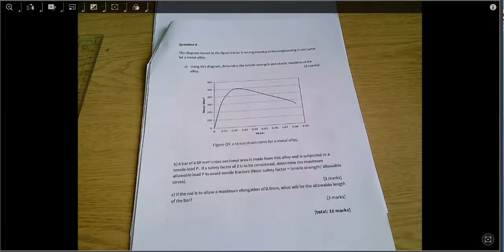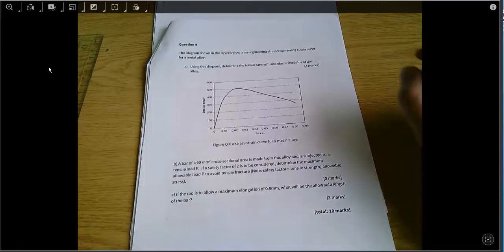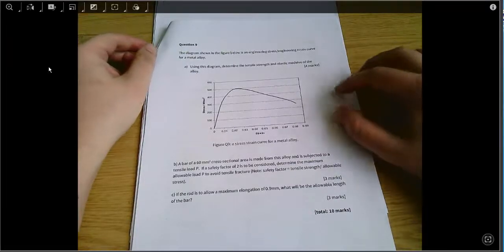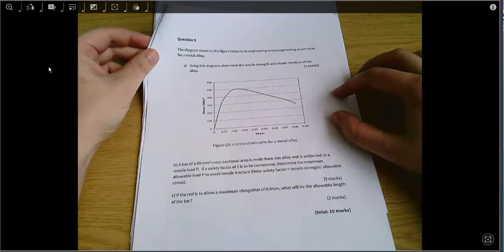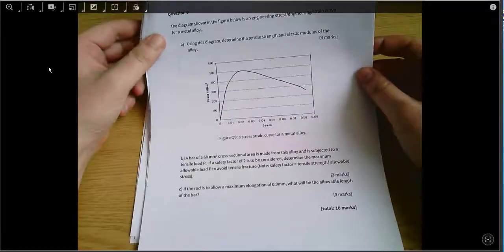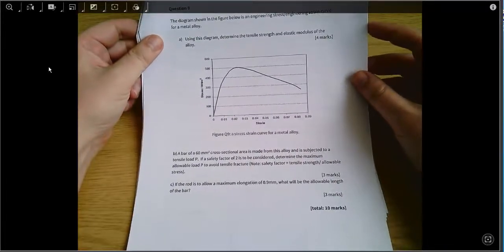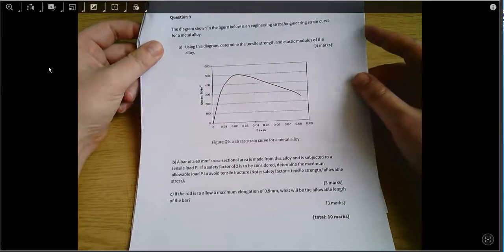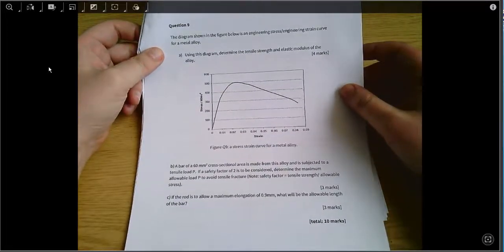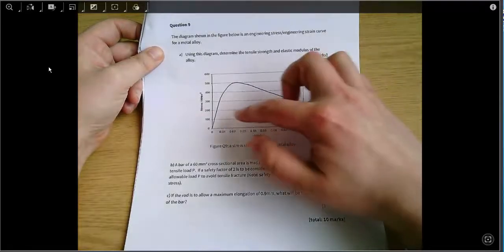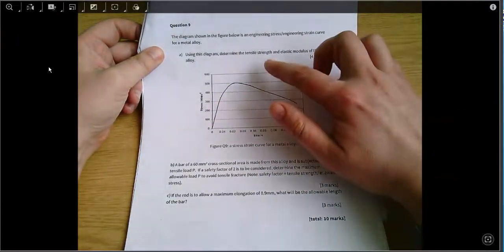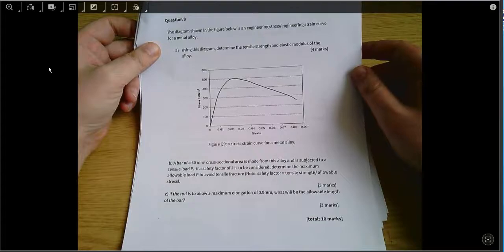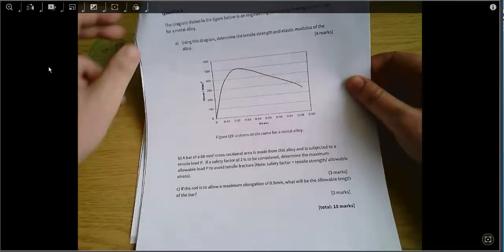Okay, this is Introduction to Mechanical Engineering, the 2017-18 exam, and we're looking at question 9 here, which is more material science. We're given a stress-strain curve shown here, and first of all we're asked for the tensile strength and elastic modulus of the alloy.